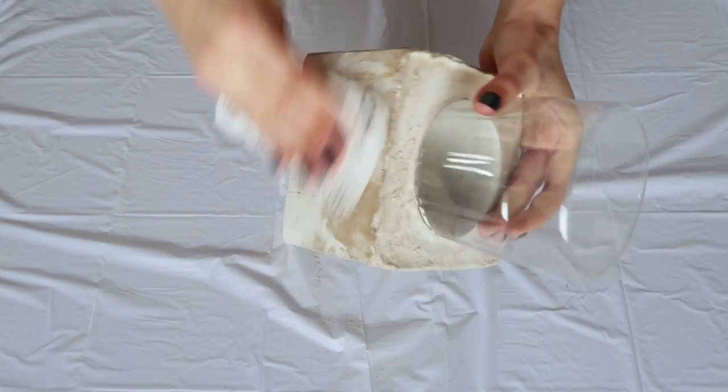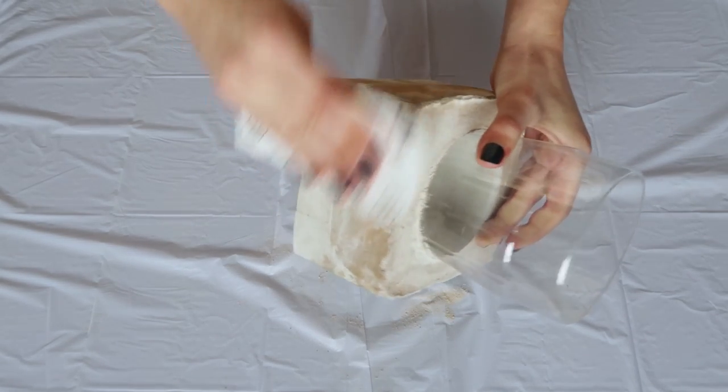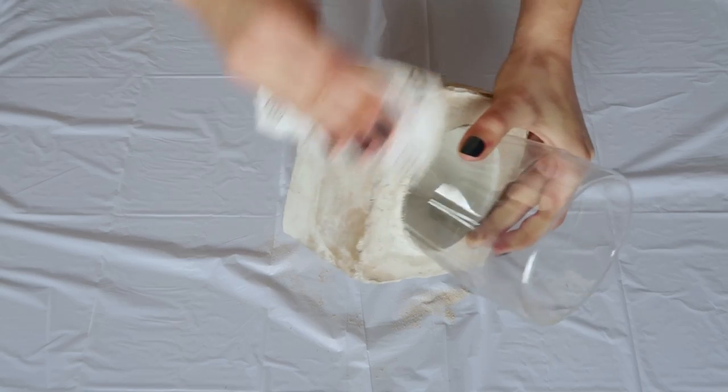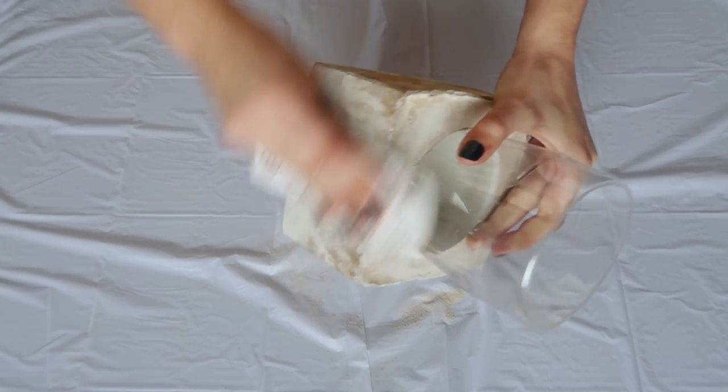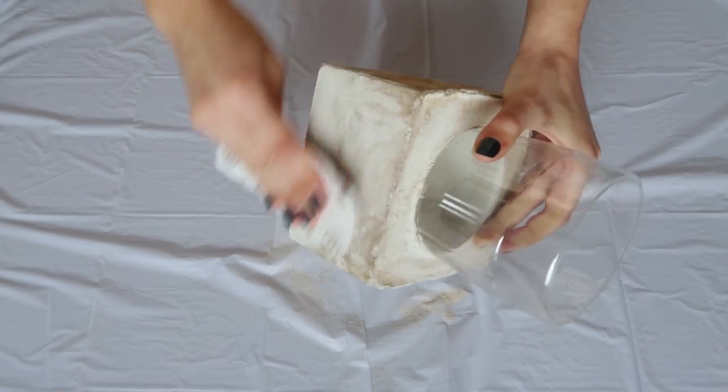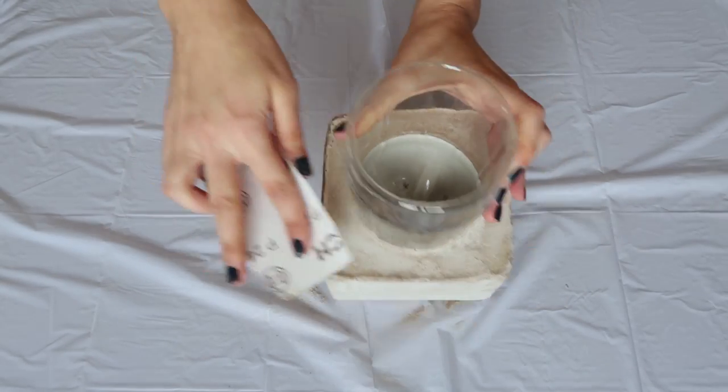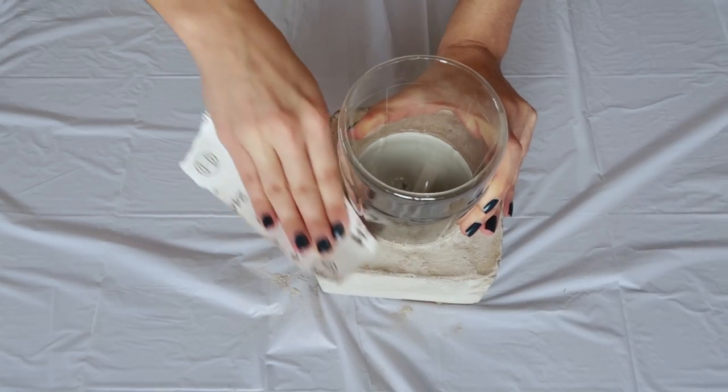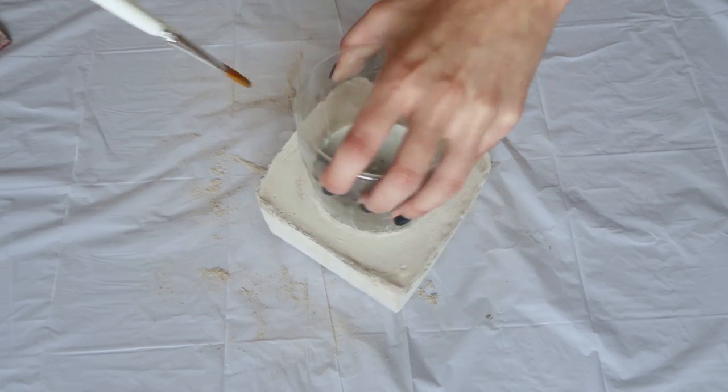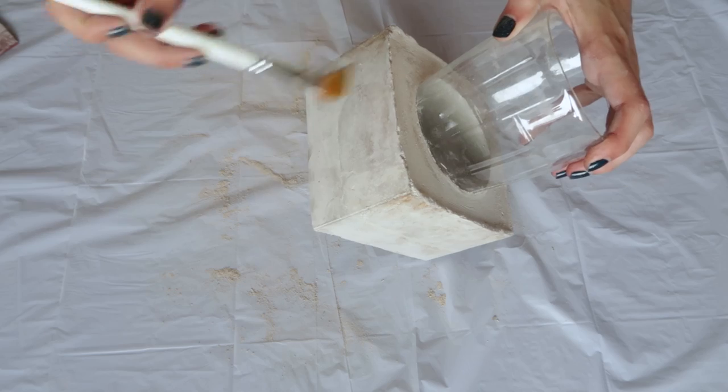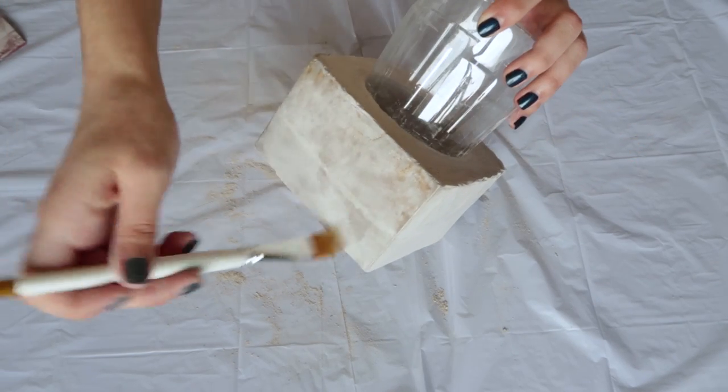Once it was dry, I sanded the top and the sides to make the texture a bit smoother. If you feel like the cement is starting to crumble a bit, kind of like a sand texture, it may not be fully dry. If this happens, leave it to dry a bit more and check on it again later. Remove the dust. I just used my paint brush and also a paper towel for this.